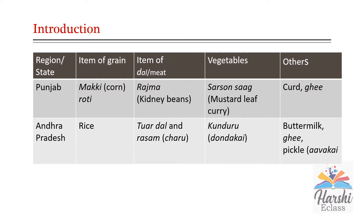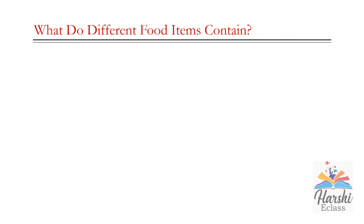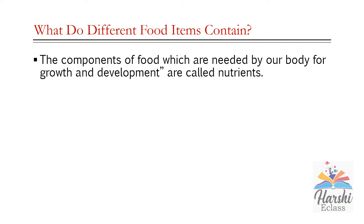Why do meals usually consist of such a distribution? What do different food items contain? We know that each dish is usually made up of one or more ingredients. Ingredients are the substances or raw materials which we use to prepare a recipe. These ingredients we get from plants and animals. These ingredients contain some components that are needed by our body — those are called nutrients. The components of food which are needed by our body for growth and development are called nutrients.